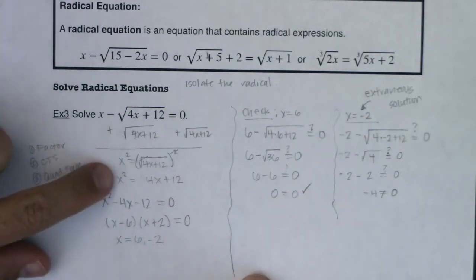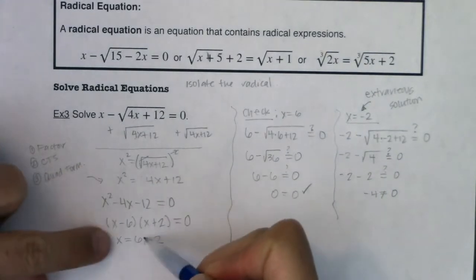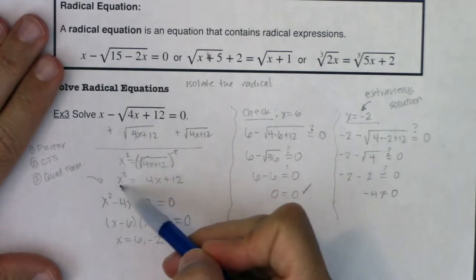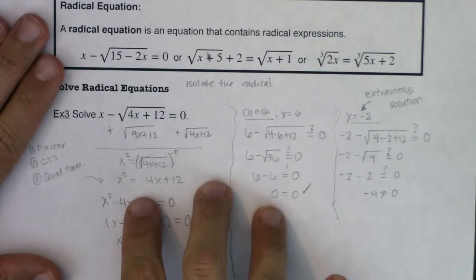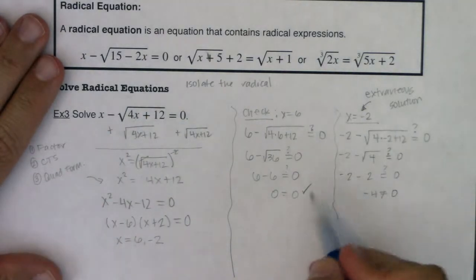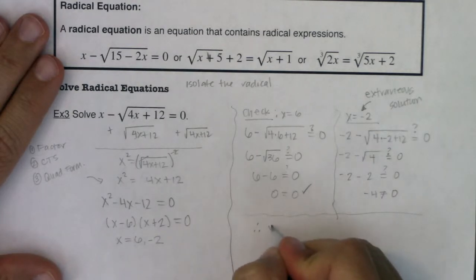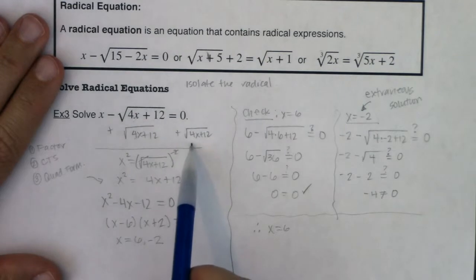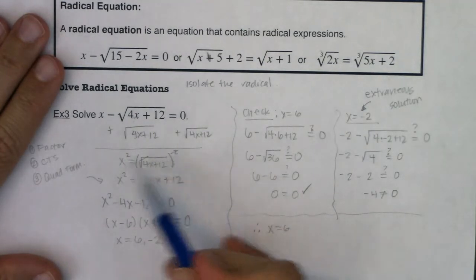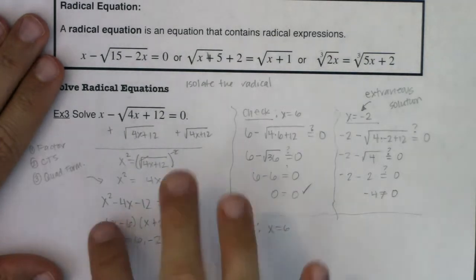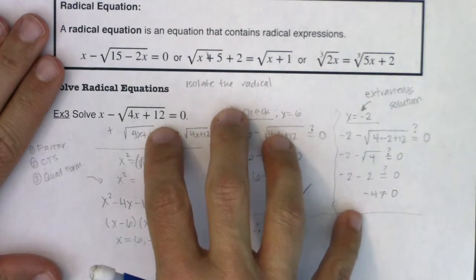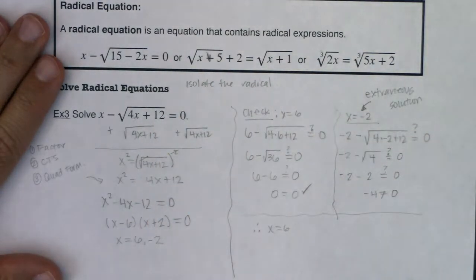We get that extraneous solution because we ultimately squared both sides and then we solved that quadratic equation, which will always give us these two answers. But in squaring both sides, you pop up an extra answer most of the time. Not all the time, but most of the time you do. So it has to do with the fact that we squared both sides and then we solved the quadratic equation, which will always give you two answers, even though it's quite possible only one of them was your solution. So for this problem, the only answer that we really should have is x equaling 6.